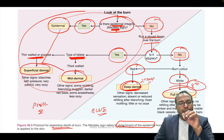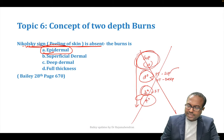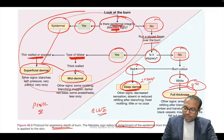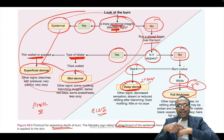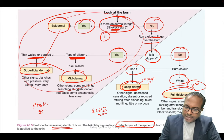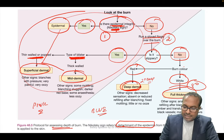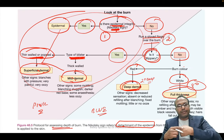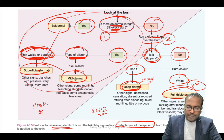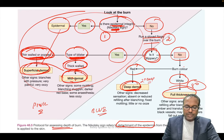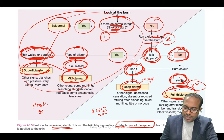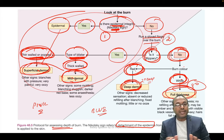New assessment in Bailey: Step 1 — Nikolsky sign. Step 2 — run a gloved finger; if smoothly slipping, it is superficial or mid-dermal. Thin-walled blister = superficial dermal; thick-walled blister = mid-dermal. If not slippery, check color: red = deep dermal (old second degree deep burns), white = full-thickness (old third degree).